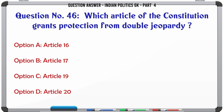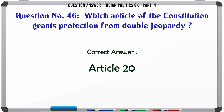Which article of the Constitution grants protection from Double Jeopardy? A. Article 16. B. Article 17. C. Article 19. D. Article 20. The correct answer is Article 20.